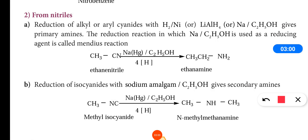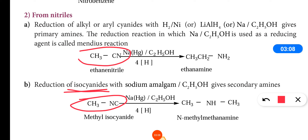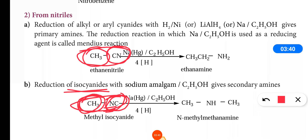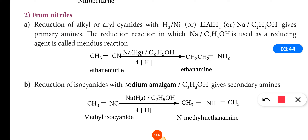Next is the preparation of amines from isocyanides. Isocyanides and cyanides have the same general formula but they are isomers. In cyanide, the alkyl group is linked directly to carbon, whereas in isocyanide, the alkyl group is linked with carbon through nitrogen. Reduction of isocyanides with sodium amalgam in alcoholic medium gives secondary amines.